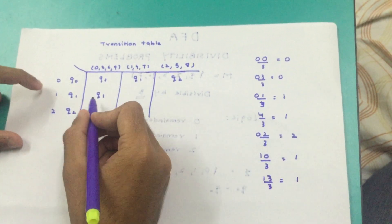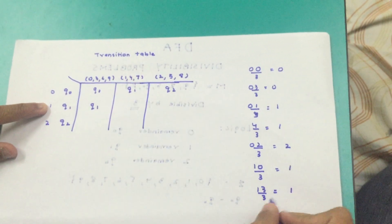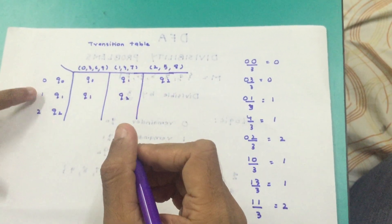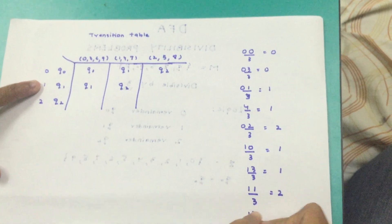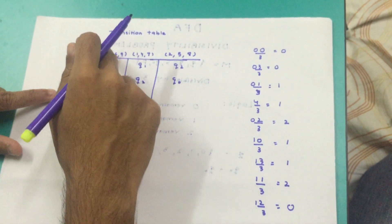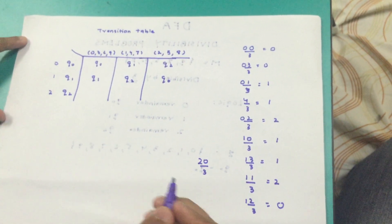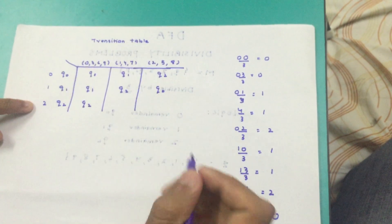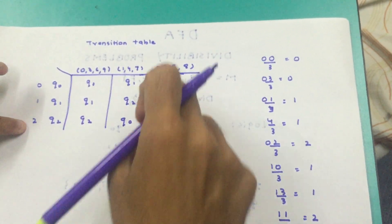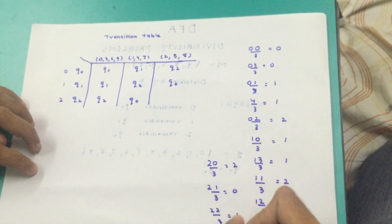For q1 with {1,4,7}: 11 divided by 3 gives remainder 2, so I go to q2. For q1 with {2,5,8}: 12 by 3 is completely divisible, so remainder 0 — I go to q0. Now for q2 with {0,3,6,9}: 20 divided by 3 gives remainder 2, so I go to q2. For q2 with {1,4,7}: 21 by 3 is completely divisible, remainder 0 — I go to q0. For q2 with {2,5,8}: 22 by 3 gives remainder 1, so I go to q1. This completes the transition table.